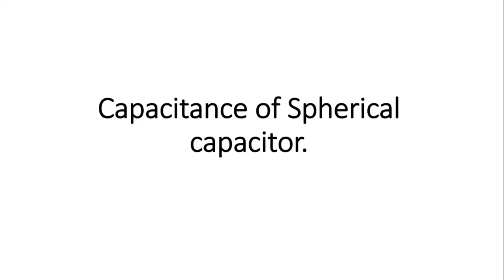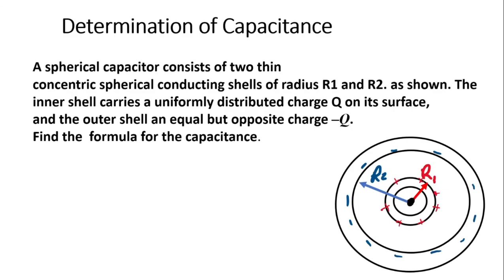In this example, we are going to calculate the capacitance of a spherical capacitor. We have a spherical capacitor consisting of two thin concentric spherical conducting shells of radius R1 and R2. The inner shell carries uniformly distributed charge plus Q on its surface, and the outer shell has an equal but negative amount of charge, minus Q. The objective is to find the formula for the capacitance of this spherical capacitor.